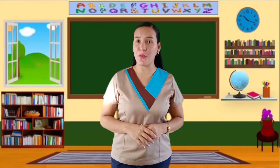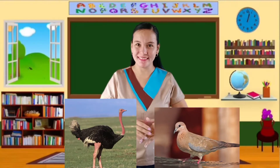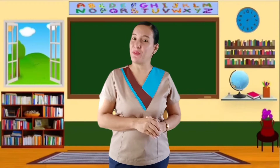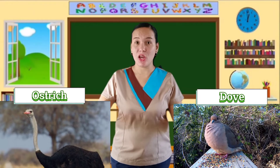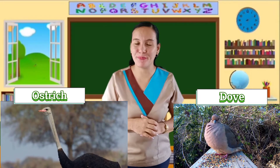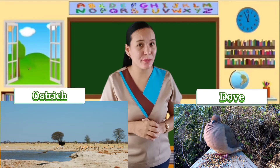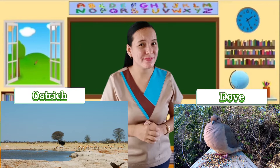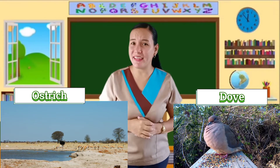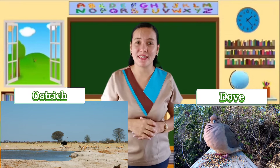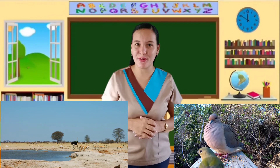Class, do you know what these animals are? Yes! These are dove and ostrich. They are examples of birds. Can you describe their body covering? Very good. Their body is covered with feathers, and they possess a pair of wings.